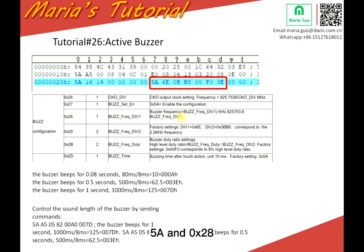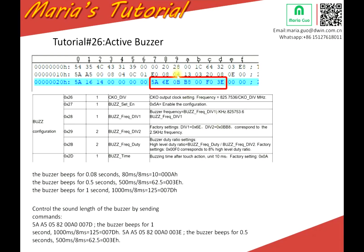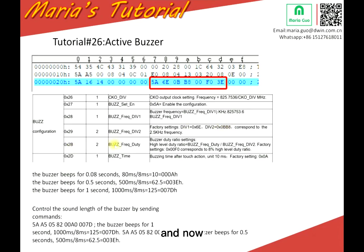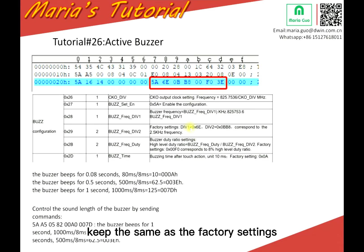And 28 is the builder frequency — this is the X polarization, so here we write 6E. And 29 is two bars — this is the factory settings. Here you can see above is 0B, B8. Same as this. And 2B is also the builder duty ratio settings. 00F0 is the factory settings, so you can keep the same as the factory settings.